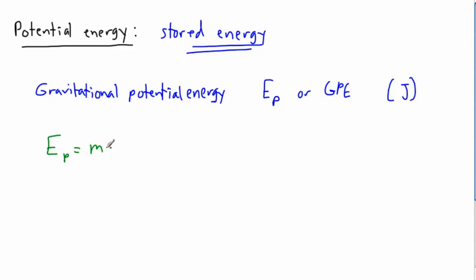So if we're talking about on Earth at least, I'm going to write it with an Ep like this. It's going to be M times G times H. That's going to be the equation here. So this one right here, it's important to define it. So Ep, that's going to be the gravitational potential energy.